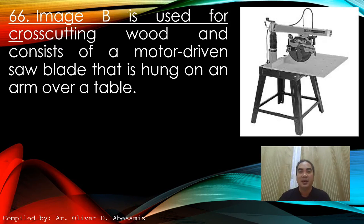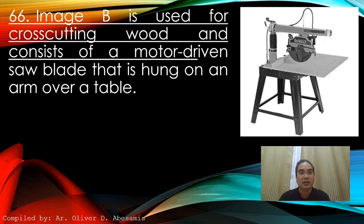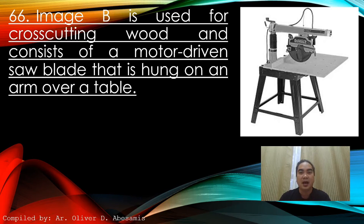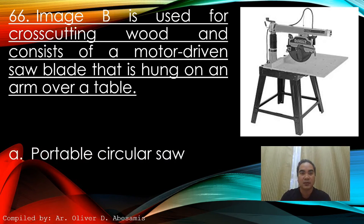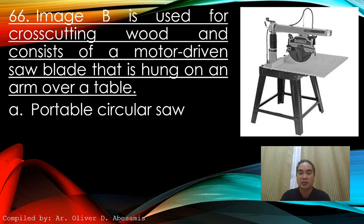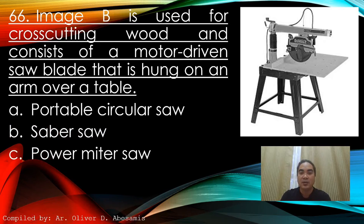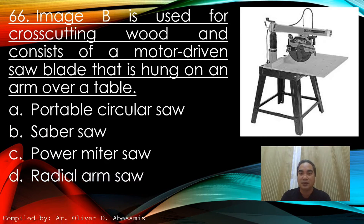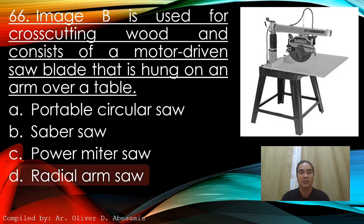Identify the image. This image is used for cross-cutting wood and consists of a motor-driven saw blade that is hung on an arm over a table. A. Portable circular saw. B. Saber saw. C. Power miter saw. D. Radial arm saw. Answer: D. Radial arm saw.